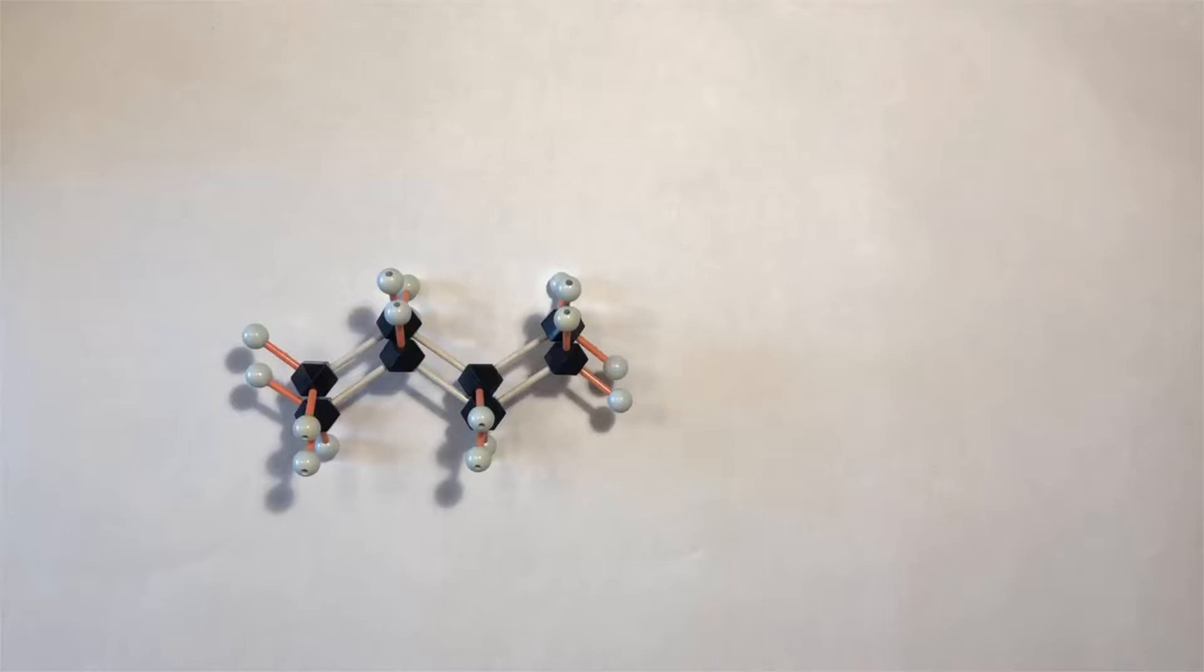When you rotate about single bonds in a molecule, you don't change its identity. A given molecule may have many different rotational forms. These are called conformations, but conformations aren't different molecules. They're rotational forms of the same molecule.